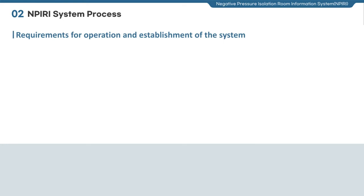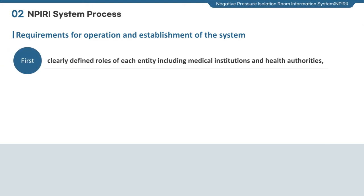There are some requirements for successful operation and establishment of the negative pressure room operating status information system. First, the roles of each participating agency, such as medical institutions and health authorities, should be defined clearly. For instance, medical institutions should know the time to update their status. Health authorities should have guidelines on when, how, and which items they should analyze to make decisions, and HIDA should know how it can support system maintenance and improvement activities to avoid any confusion.